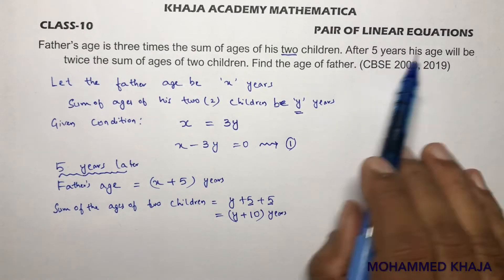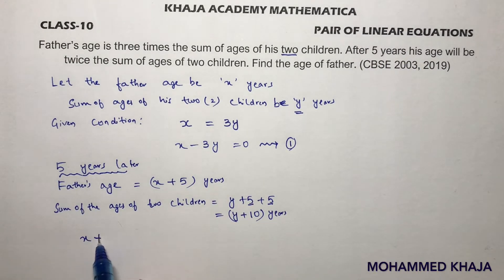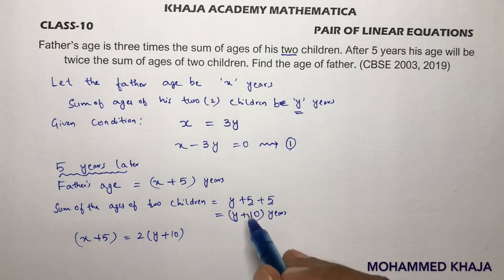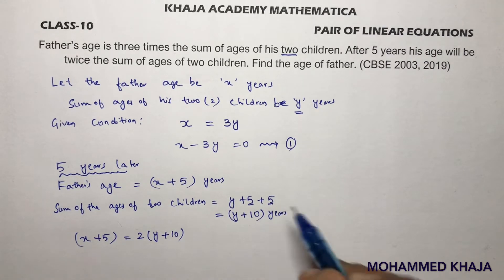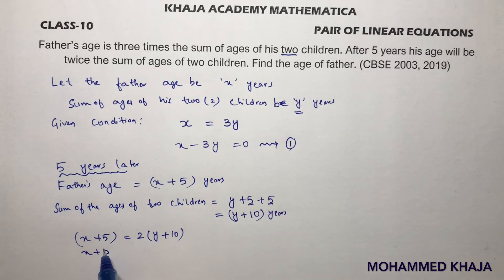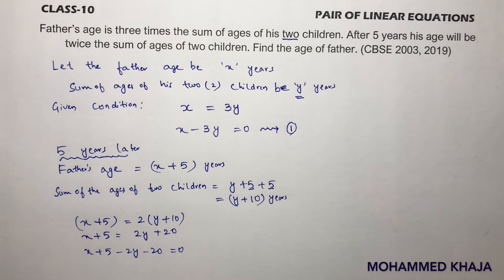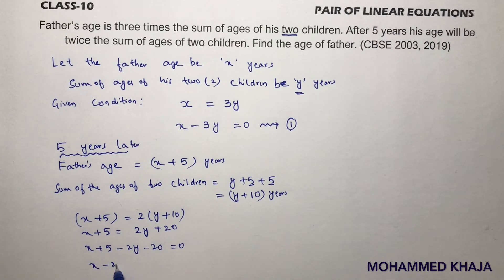After five years, father's age will be twice the sum of the ages of his two children, so x plus five equals two times (y plus ten). Most students get confused here — y plus ten because in y there are two children, so each child adds five. Simplifying: x plus five minus two y minus twenty equals zero, giving x minus two y minus fifteen equals zero. This is equation two.